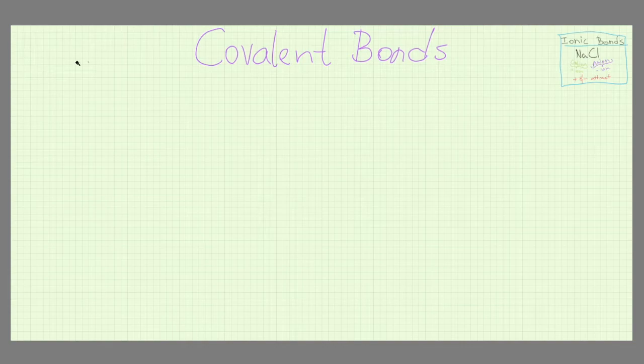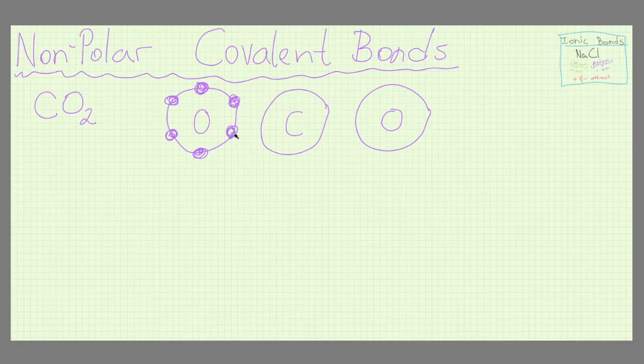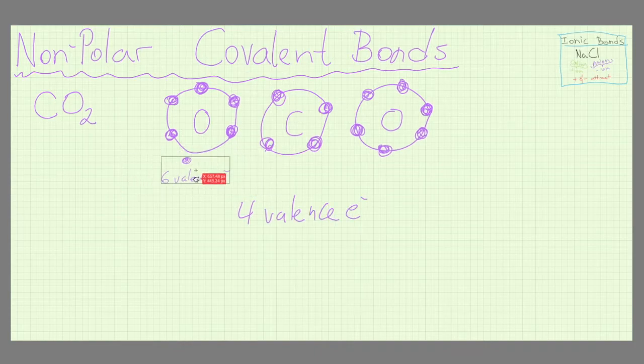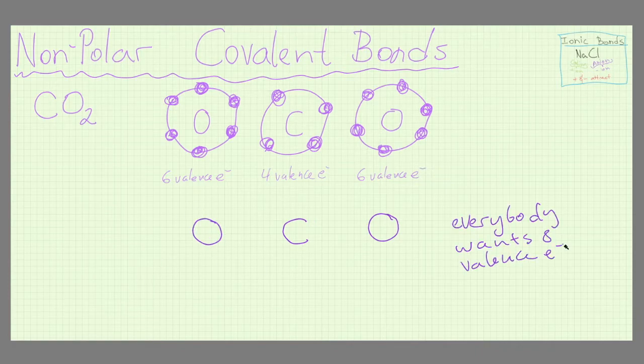Now we will examine a non-polar covalent bond, carbon dioxide CO2. Each oxygen O has six valence and carbon C has four. They all want eight.